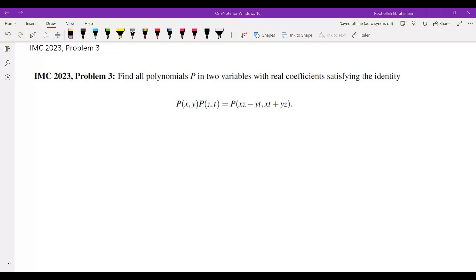Find all polynomials P in two variables with real coefficients satisfying their identity. So P of X comma Y times P of Z comma T is equal to P of XZ minus YT comma XT plus YZ.